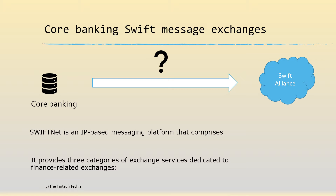SwiftNet is an IP-based messaging platform. It provides three categories of exchange services. Before we go to the technical aspect of the communication, we need to understand what these three categories of exchange services are.